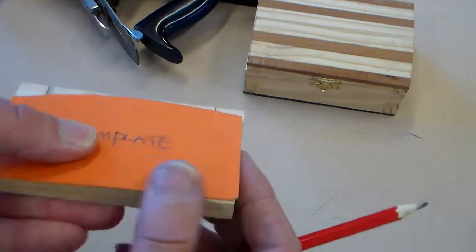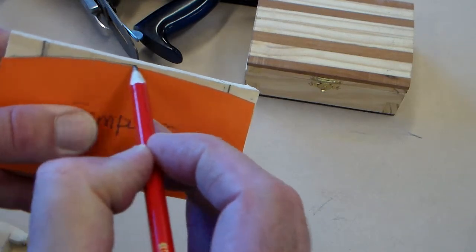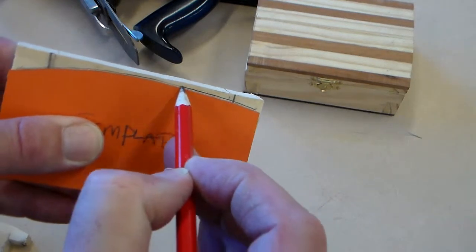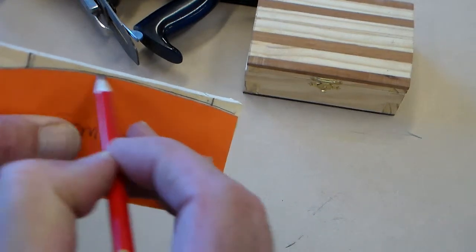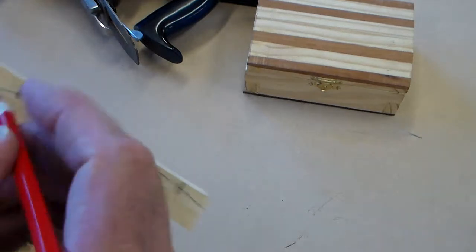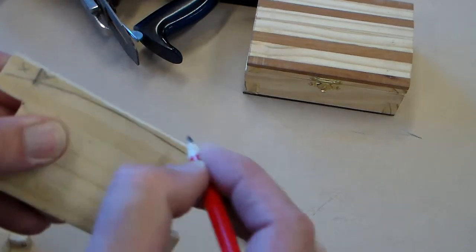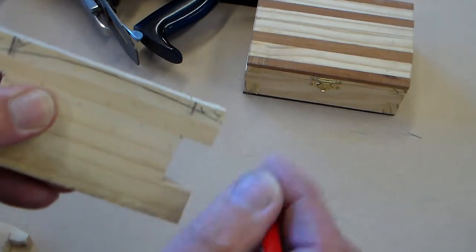And what I'm going to do with the template is just fit it up to there and then draw a line round. Once you've drawn that line round, we can just do our little x's like we did on the other bits to show that that's waste.